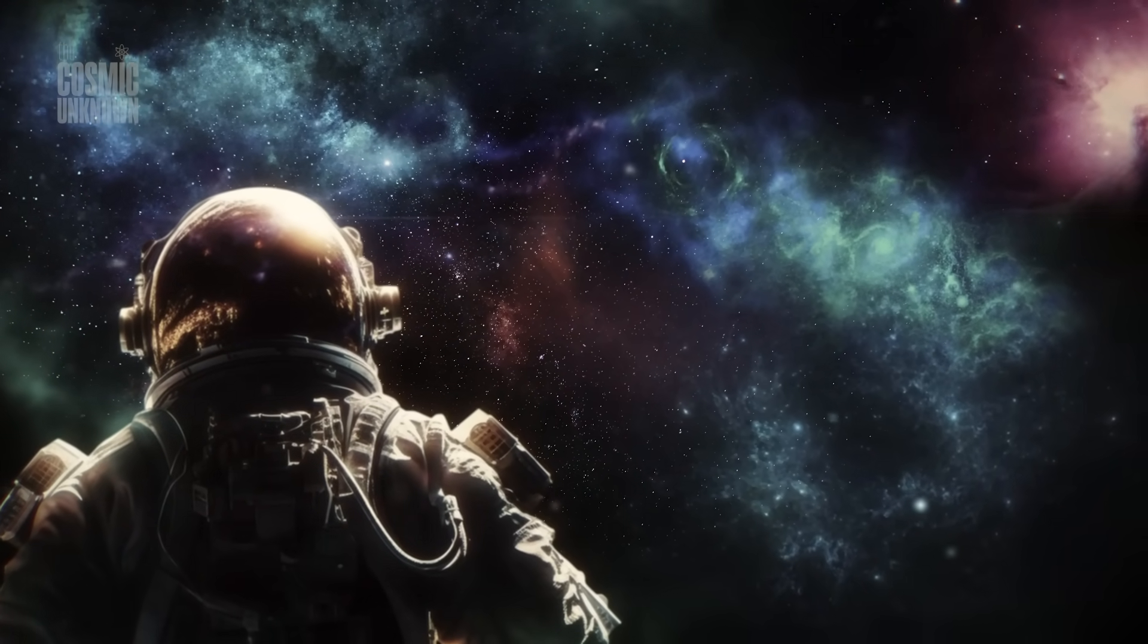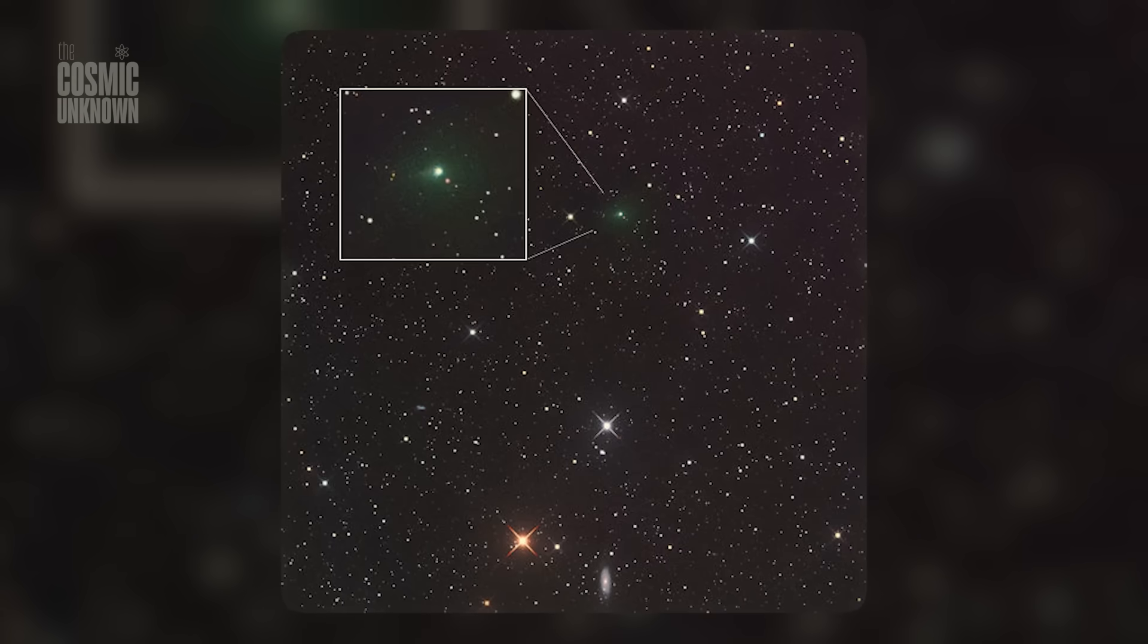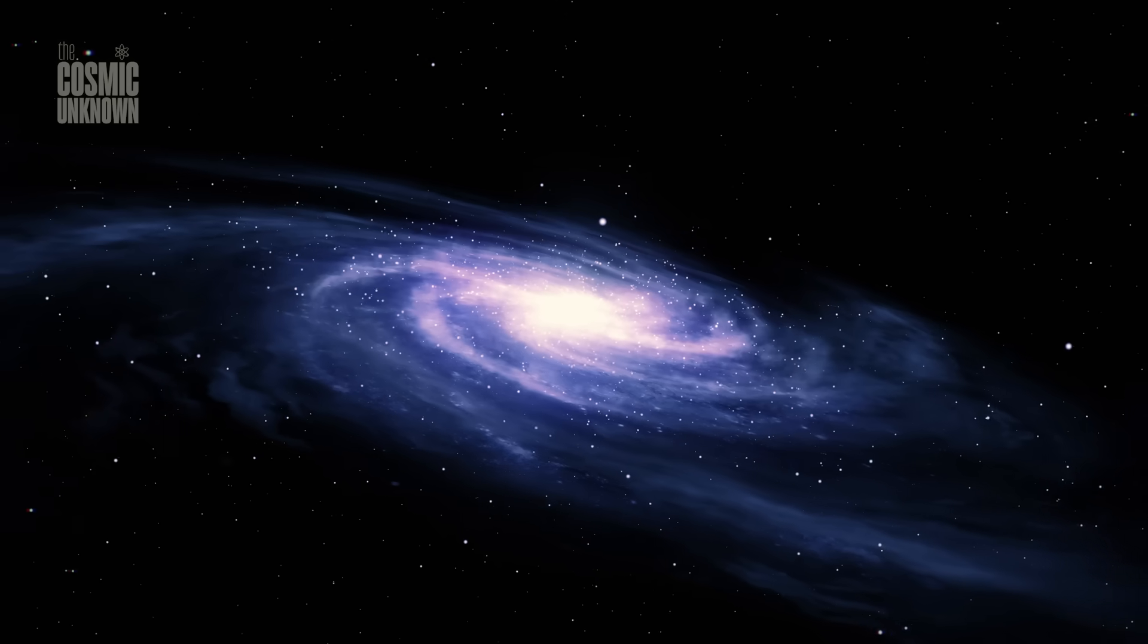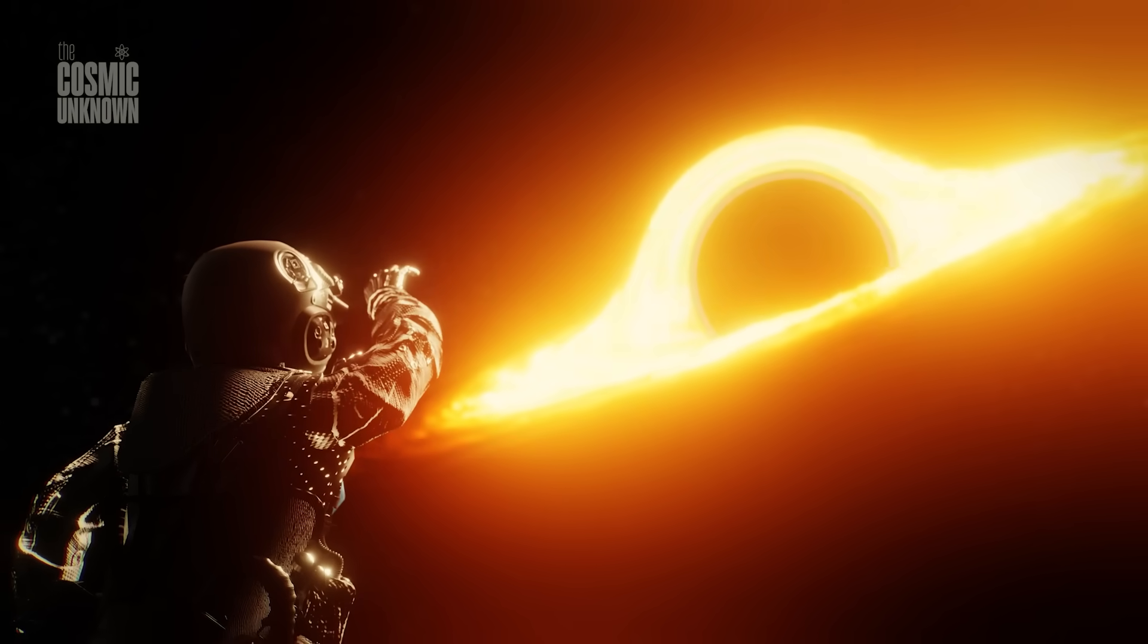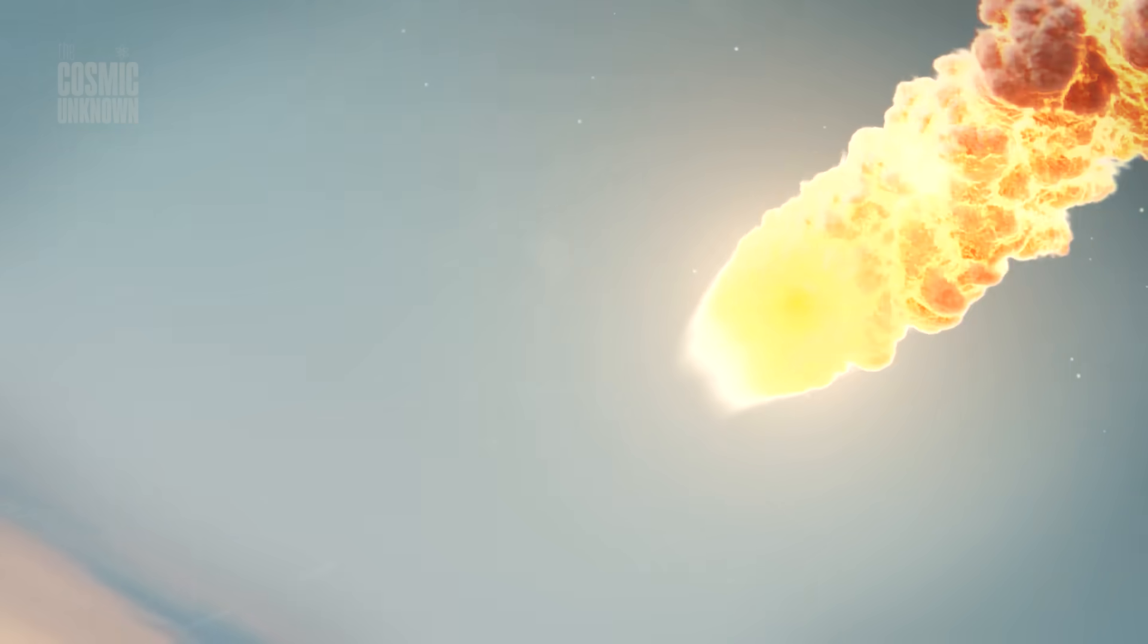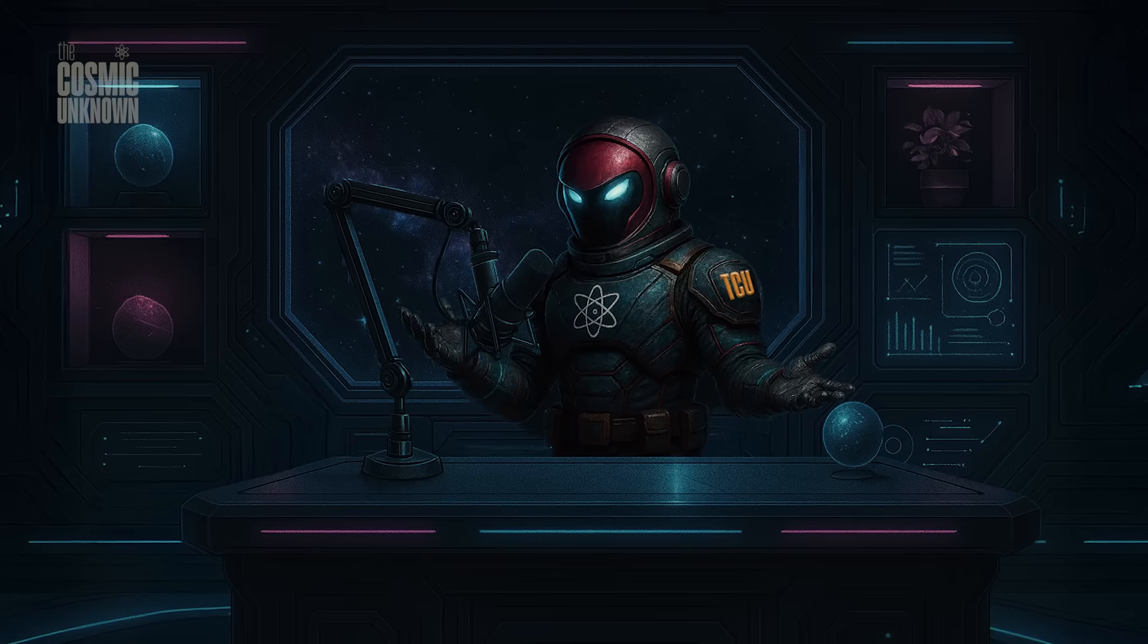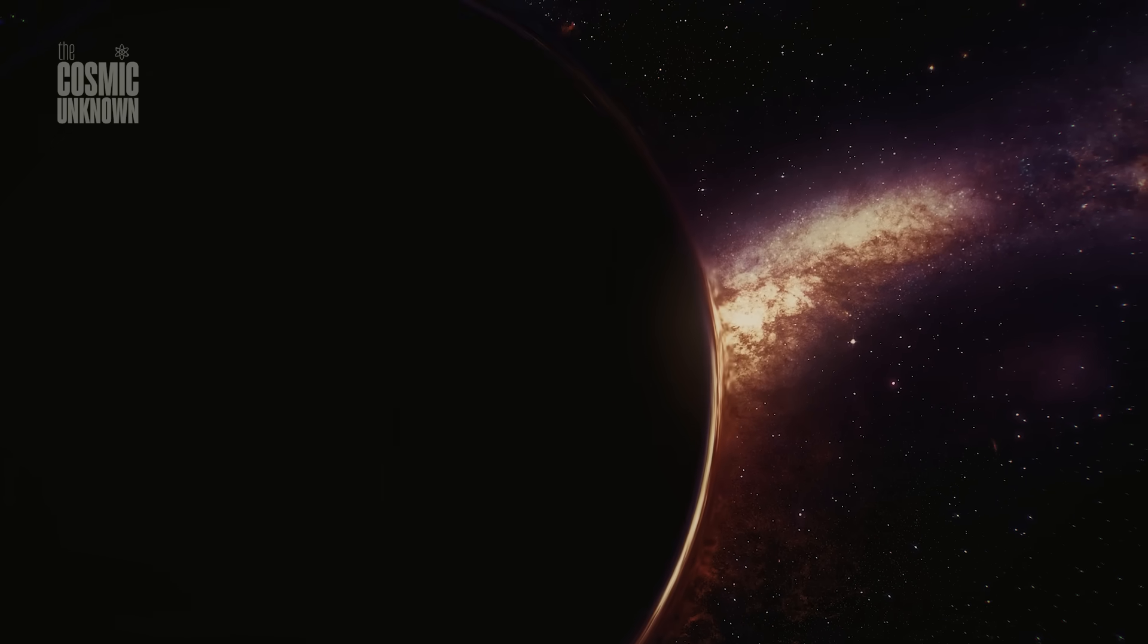Some say we're expecting too much, that space is hard, that data takes time, that this silence is just bureaucracy, not deception. But others remember Oumuamua—how it came and went with no clear answers, how its light curve didn't make sense, how it changed direction without a tail, how we still don't know what it was. And now, 3i Atlas—larger, closer, stranger—passes by a planet filled with eyes and somehow slips through them all. No confirmation, no denial, just absence. And maybe that's the real story. Not what we saw, but what we didn't. Not the images on the screen, but the frames we were never shown.